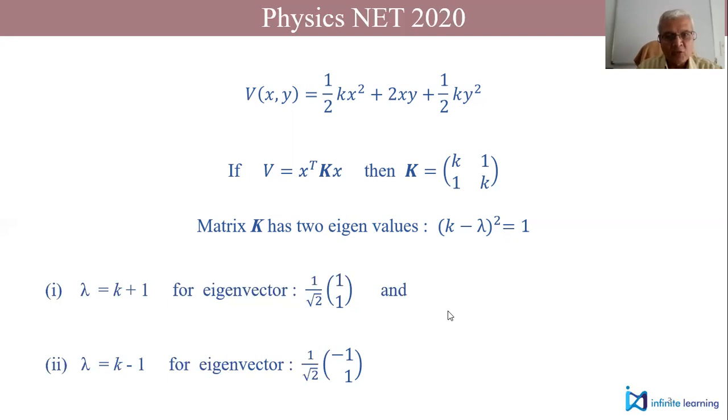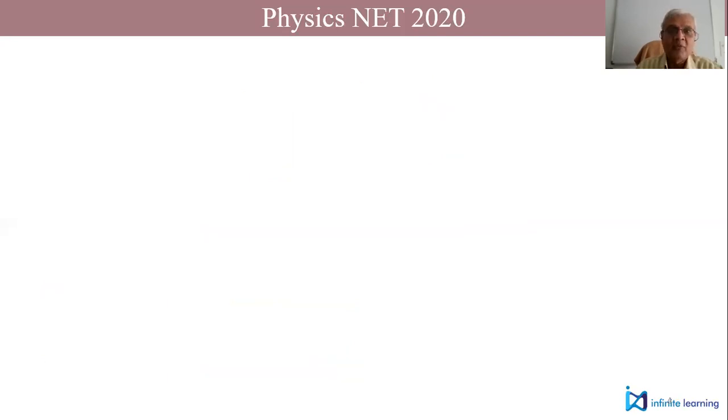If these eigenvectors are put side by side and a matrix is constructed, you will get your matrix as expected in this problem. Your S matrix will be [[1/√2, -1/√2], [1/√2, 1/√2]].